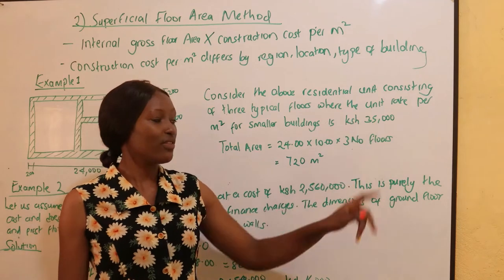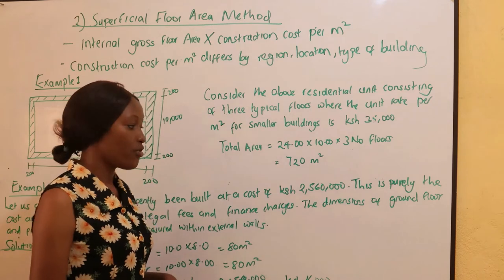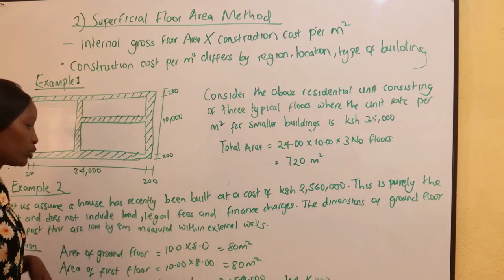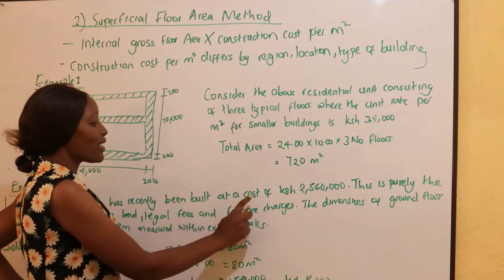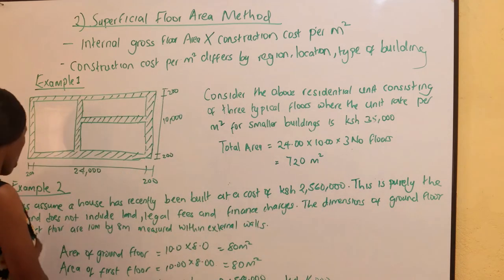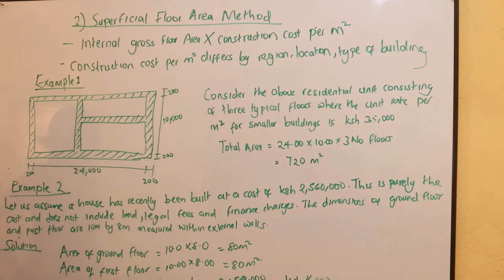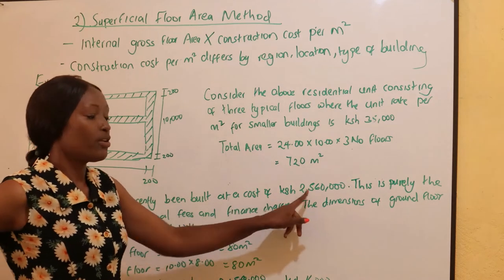So if you want to know the cost of this building, which is 720 meters squared, and the rate is 35,000 per meter squared, you simply take 720 multiplied by 35,000 to get the total cost. Now for example two: assume a house has recently been built at a cost of 2,560,000. This is purely the construction cost and does not include land, legal fees, or finance charges.